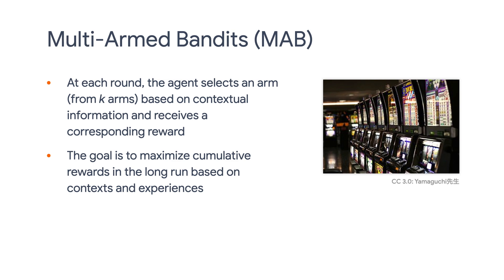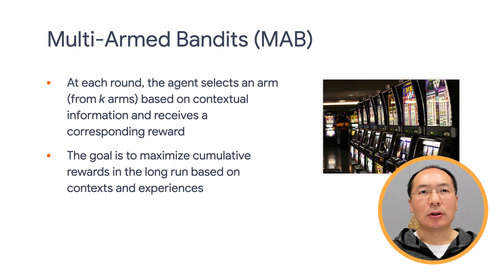Bandit Library is designed to solve multi-armed bandit tasks. In the multi-armed bandit setting, in each round, the agent receives some information about the current state. Then it chooses an action based on this information and its experience gathered in previous rounds. At the end of each round, the agent receives the reward associated with the chosen action.